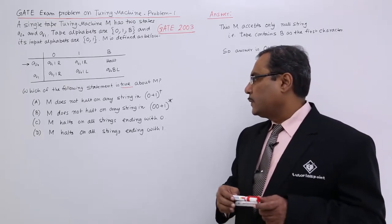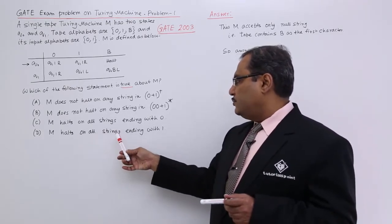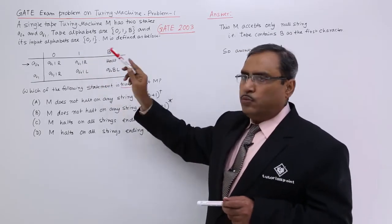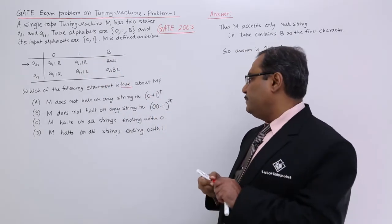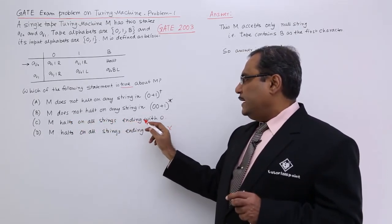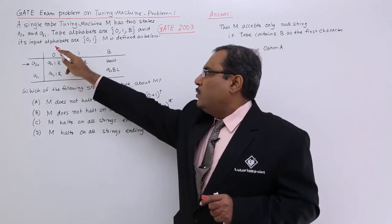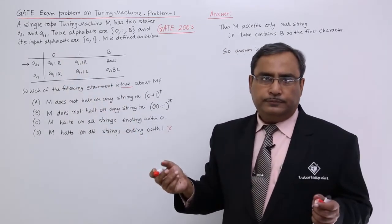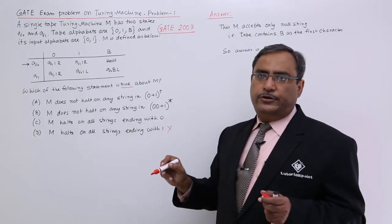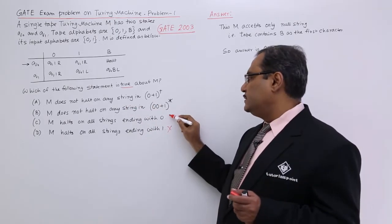Now see, it halts on the string ending with 1 - in the 1 column there is no question of halting. So this statement is not correct. It halts on all strings ending with 0 - in the 0 column I am not finding any halt. That is why ending with 0 the machine will halt, this is not correct.